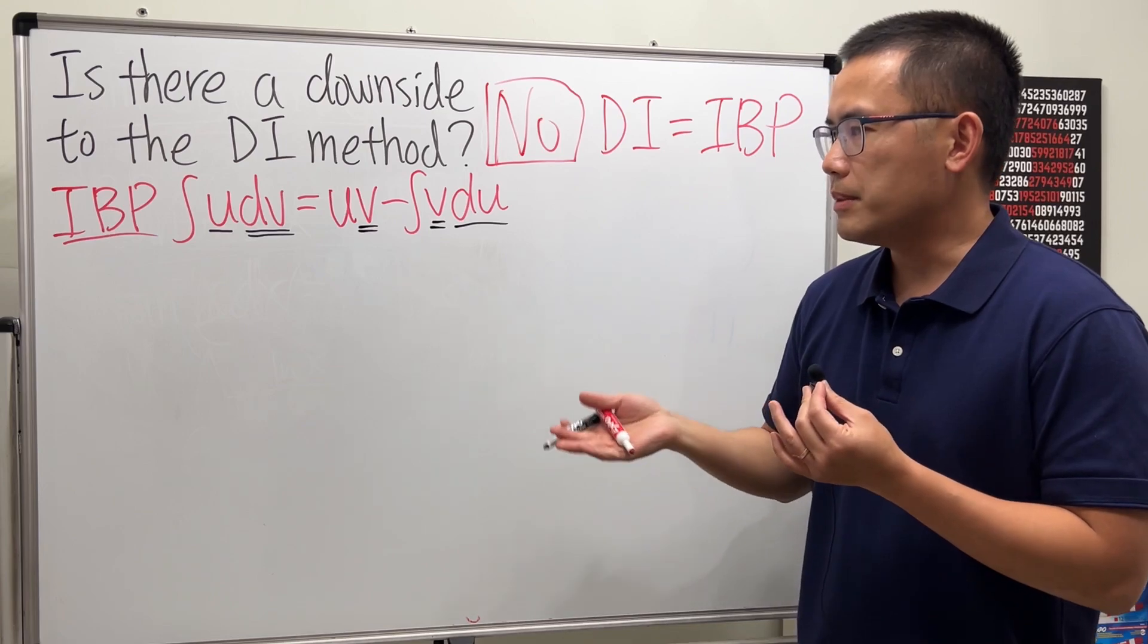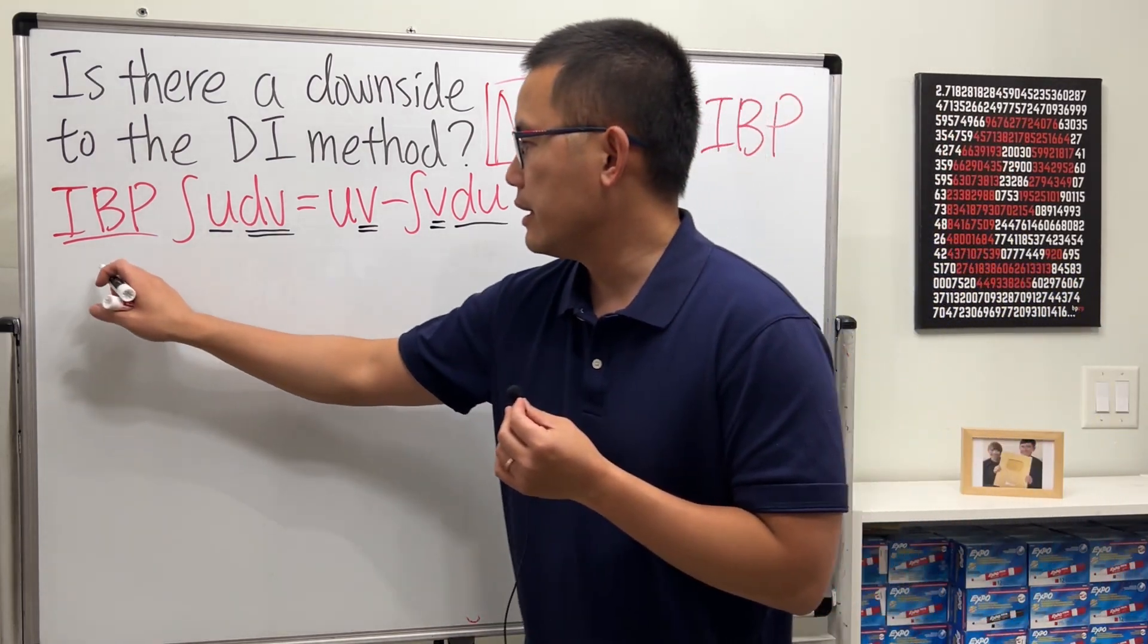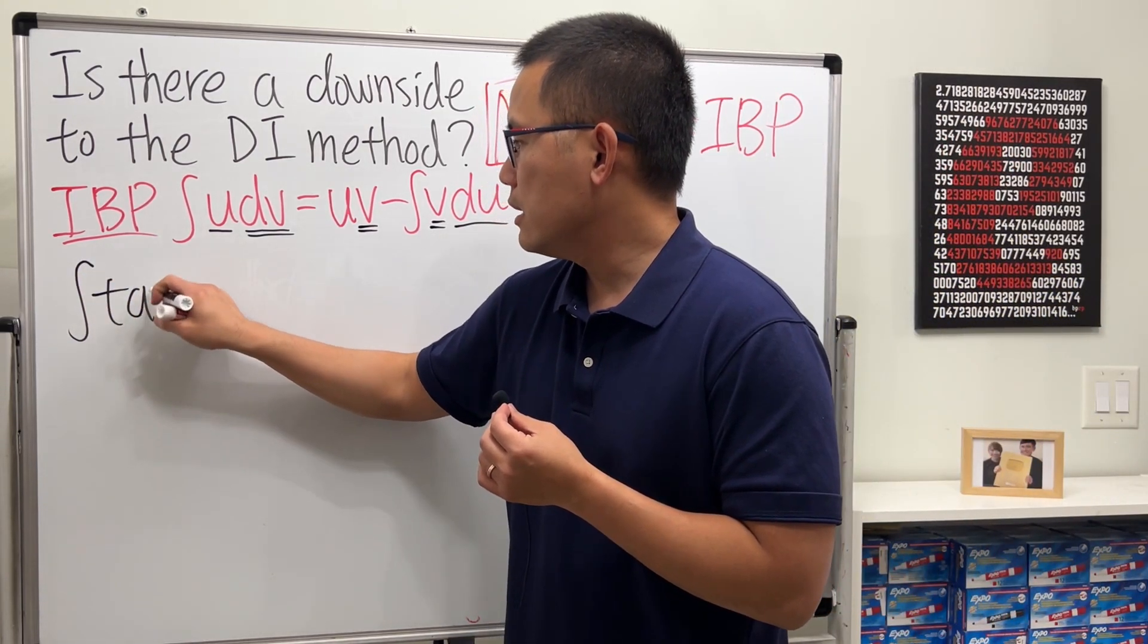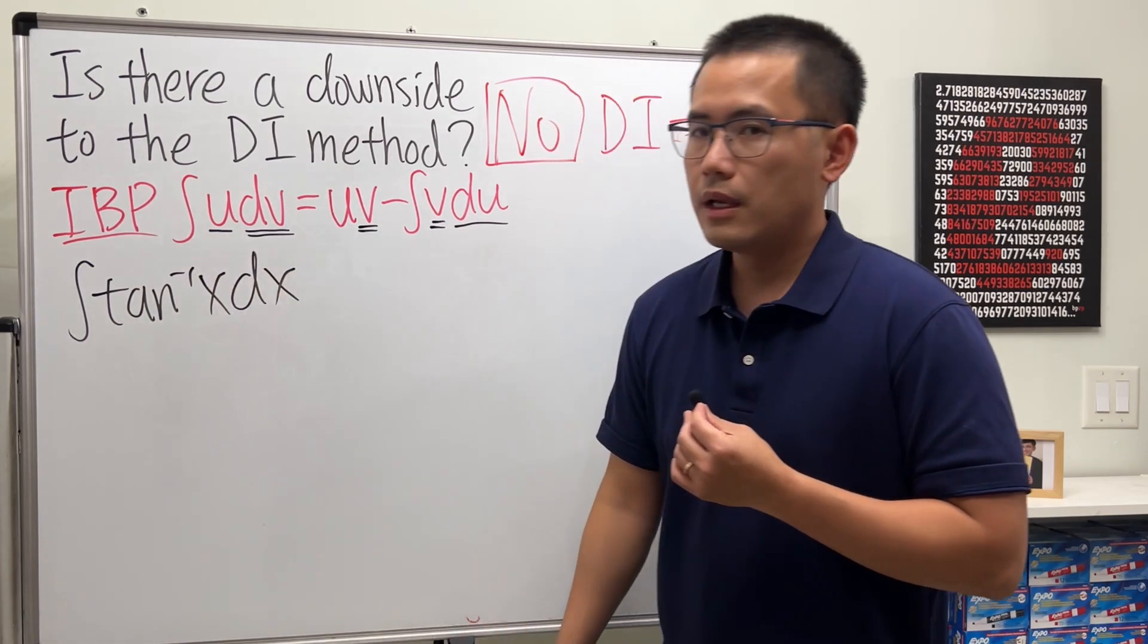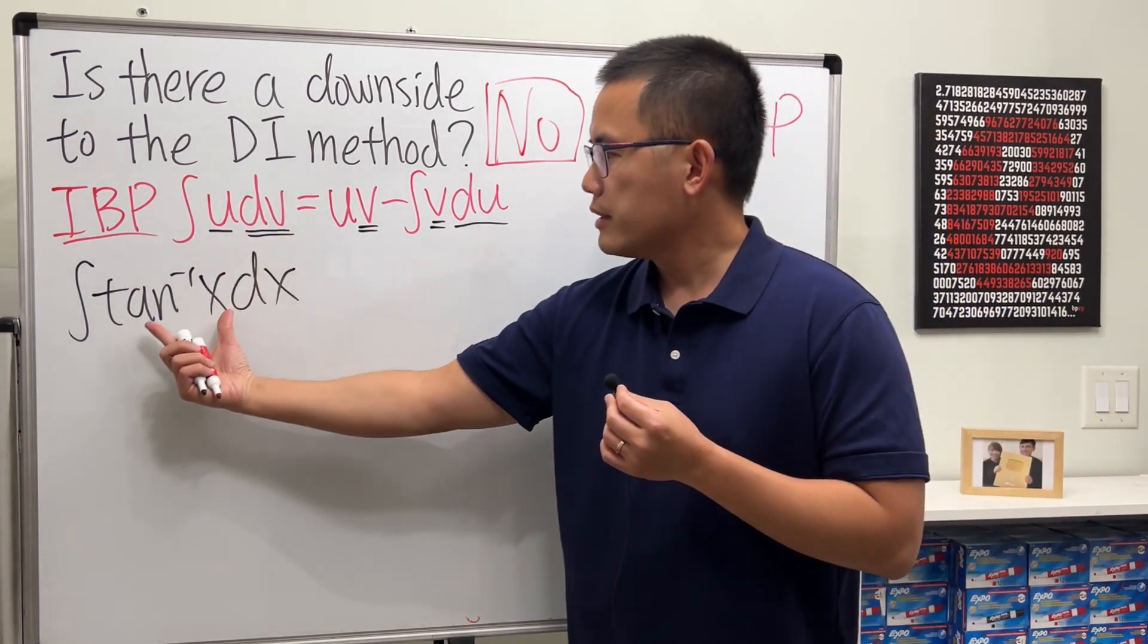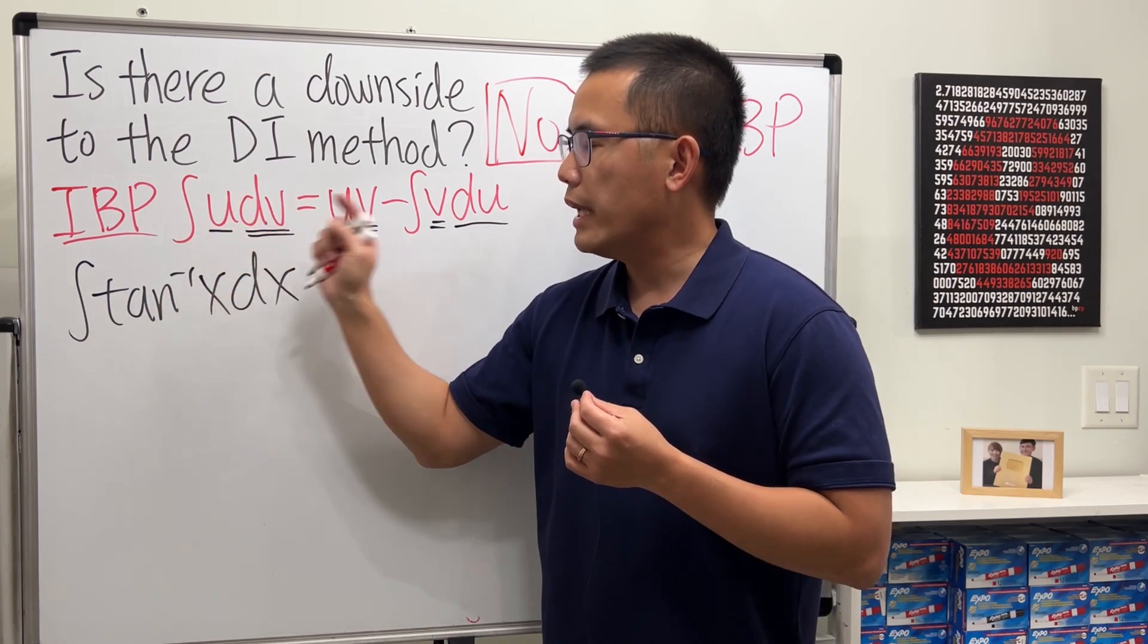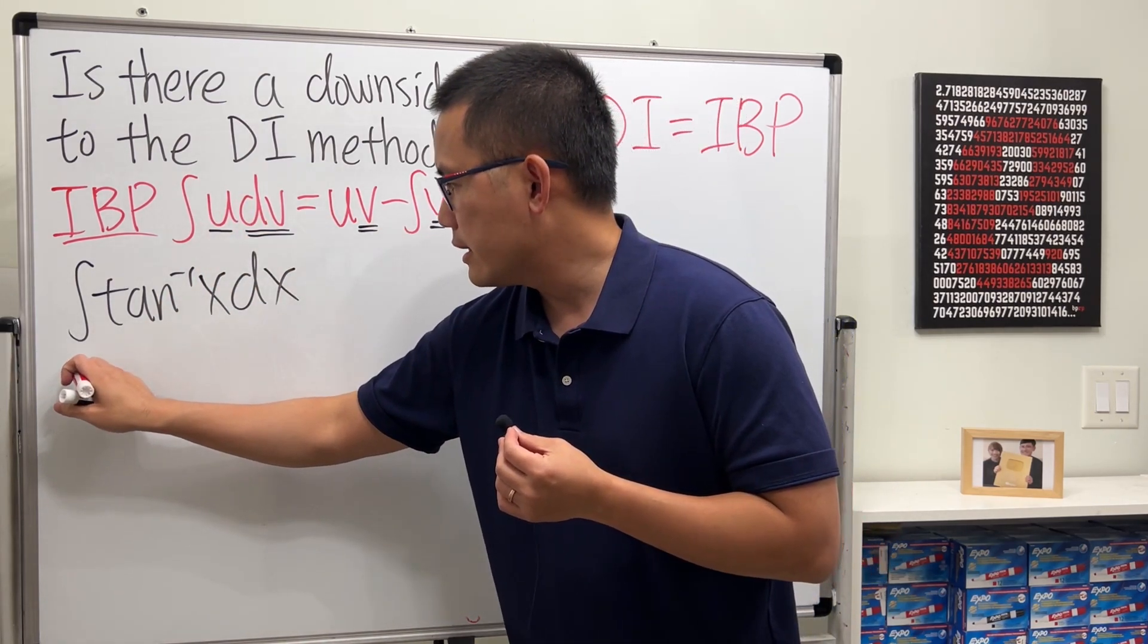Okay, so let me demonstrate this right here real quick. And the example I have in mind is, let's integrate inverse tangent of X. So our goal is to break down this integral into two parts, U and DV. So let's go ahead and make our selection.